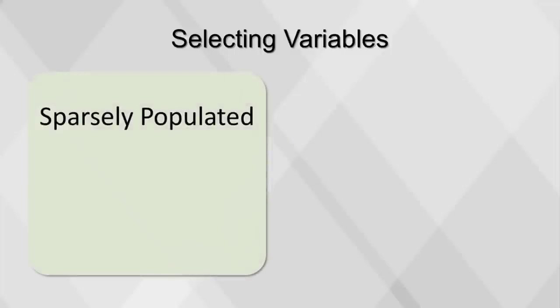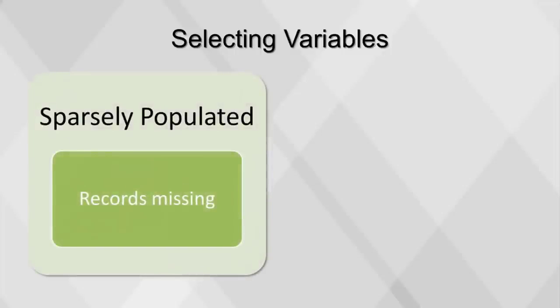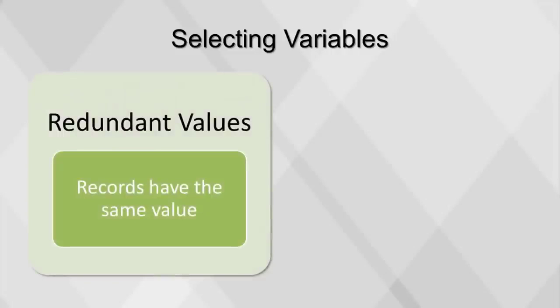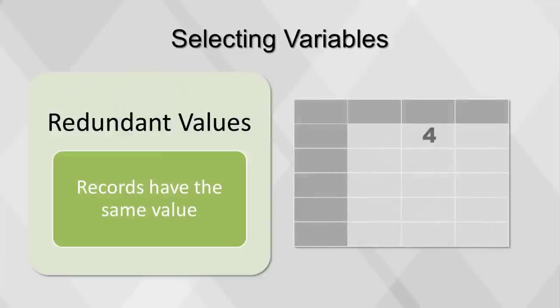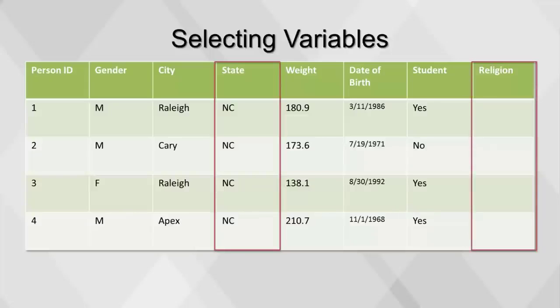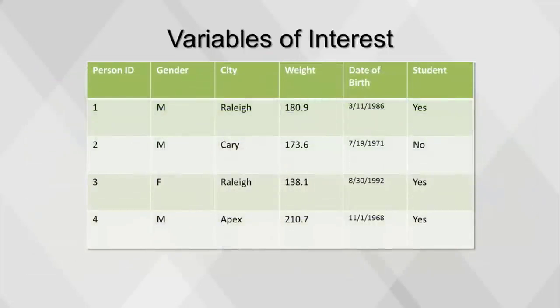Fields that are sparsely populated, meaning that a high percentage of records is missing, should not be selected. Fields with redundant values, meaning that a high percentage of records have the same value, should also not be selected. Techniques to identify these fields vary — for now, a visual inspection of the first few records can be used. From this table, we can remove the state column because all of its values are the same, and we can remove the religion column because it is sparsely populated. Our table now depicts only the variables of interest.